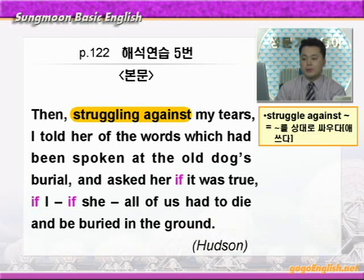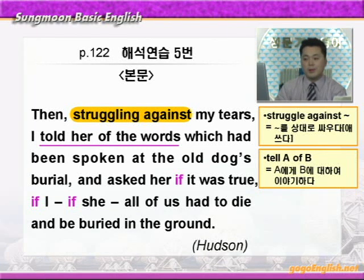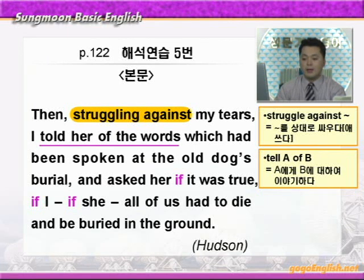'I told her of the words' — 'told her of the words'에 밑줄 쳐보세요. 'tell A of B' 하면 'A에게 B에 대하여 이야기하다' 이런 뜻이죠. 나는 그녀에게 그 말들에 대해 이야기했다. 어떤 말들입니까? 다음 관계절에서 which 이하가 설명하고 있습니다. 'which had been spoken' — 그 말들은 말해졌던 말들이죠. 어디에서? 'at the old dog's burial' — burial은 매장이라는 뜻이니까 그 늙은 개를 매장할 때 말해졌던 말들에 대해 나는 그녀에게 이야기했다.